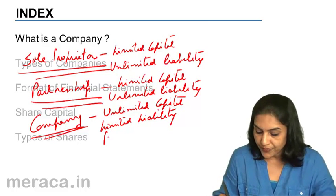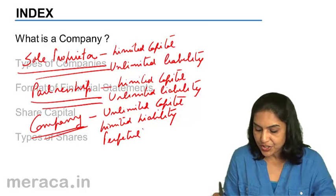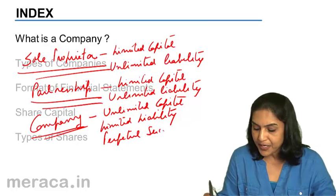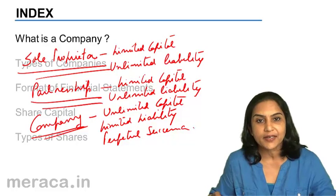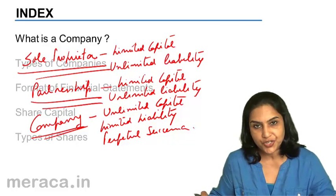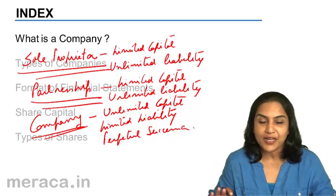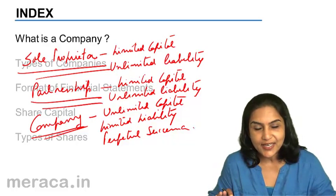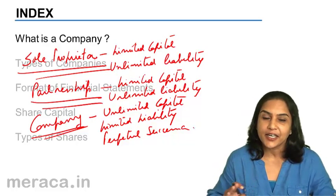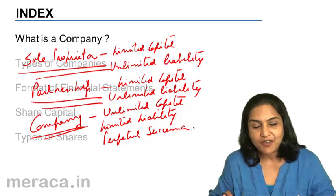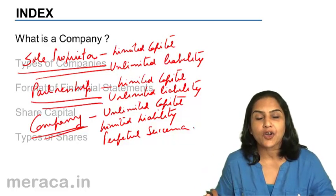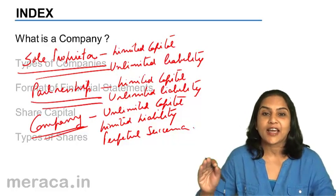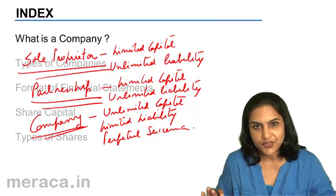Also, there is perpetual succession — that is, a company could go on forever. It does not matter when the owners change. It has a separate legal entity and can continue, having a life far beyond the lives of the individual owners.